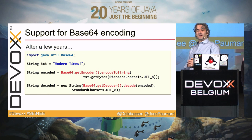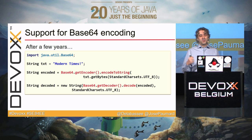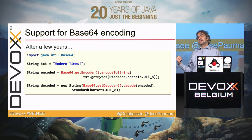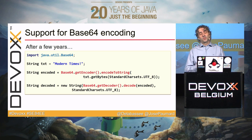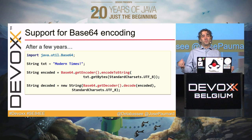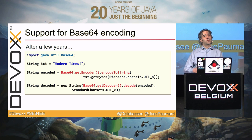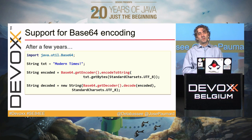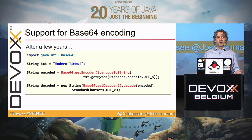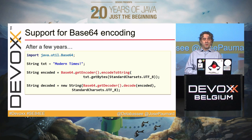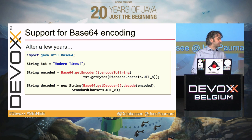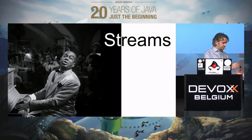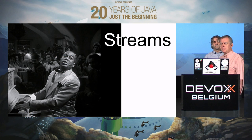We now have Base64 support in the platform. That means you don't have to rely on unsafe API or third-party libraries — it's something that is finally built into the platform. It's not a big deal, but it's nice.